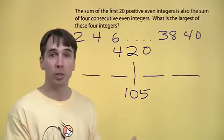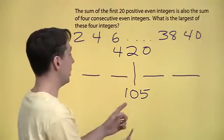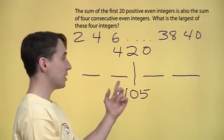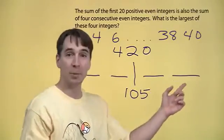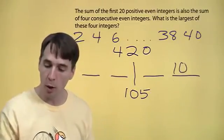And now we can figure out what the numbers are. They're consecutive even integers. So this one's just below 105. This is 104. This is 106. And that means the largest one is 108.